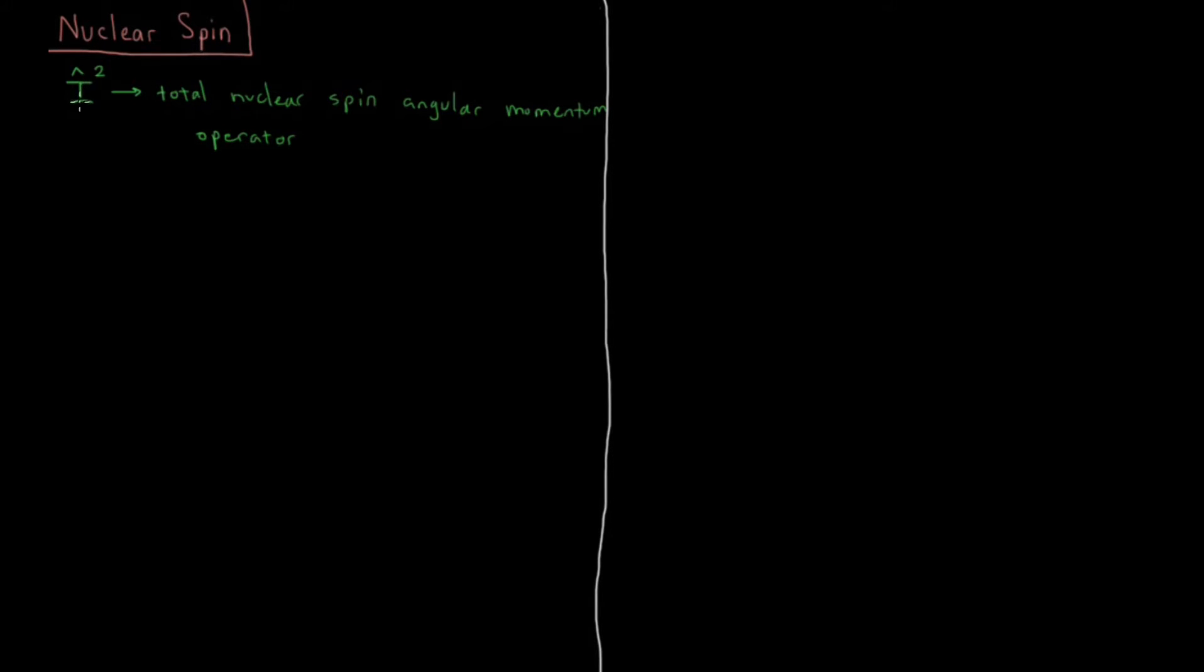And then this is also going to have a Z component of which our nuclear spin function is going to be an eigenfunction. This is the IZ operator, the component of the nuclear spin angular momentum along the Z axis.